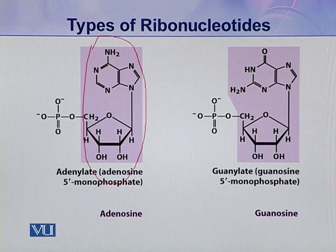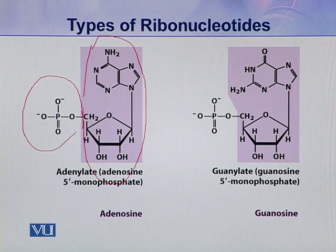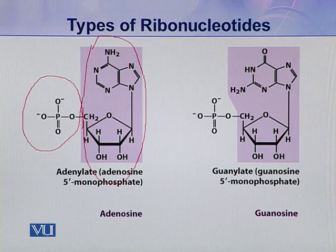Here the nitrogenous base is adenine, so this nucleoside is adenosine. When a phosphoric acid is attached to this adenosine, it becomes a nucleotide — so this adenosine becomes adenylate.